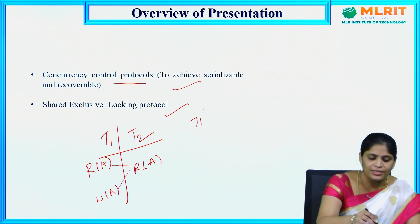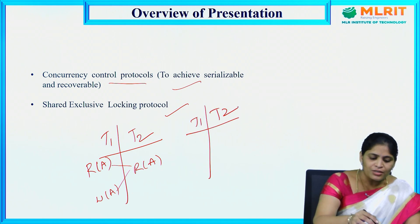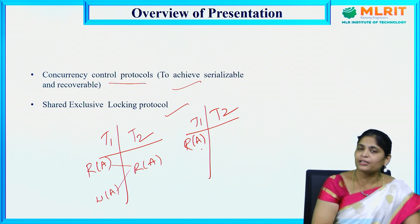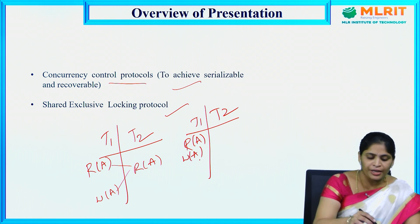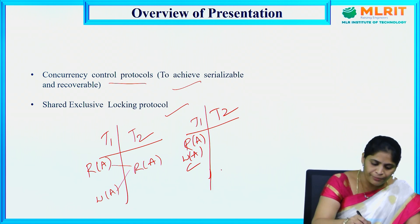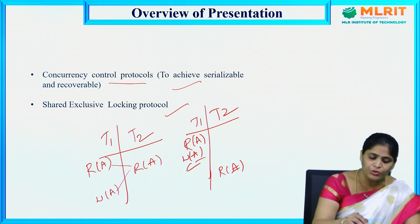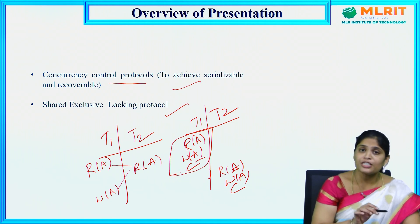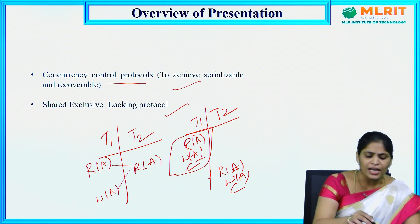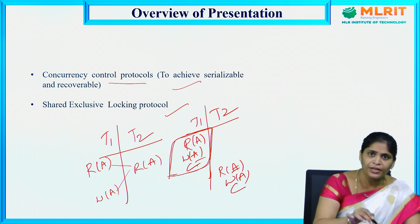What is serializable manner? Here I am performing a read operation on data item A and a write operation on data item A, and then commit. Then only I want to perform a read operation on the same data item A — which was updated in T1 — and again update and then commit. This is what serializability means: we perform all operations in T1 completely, then only T2 will start.